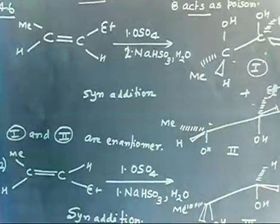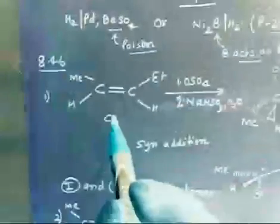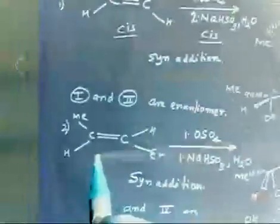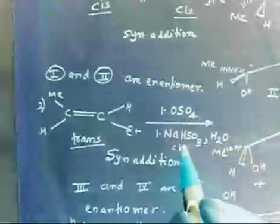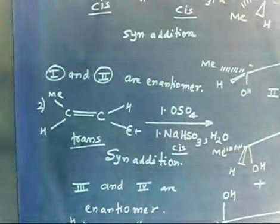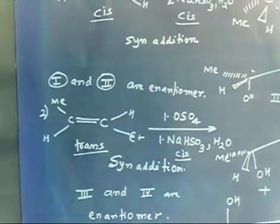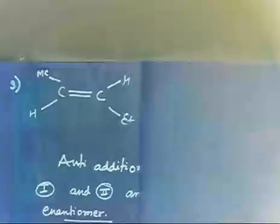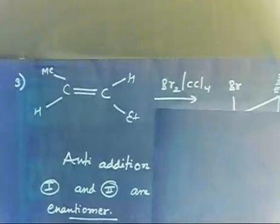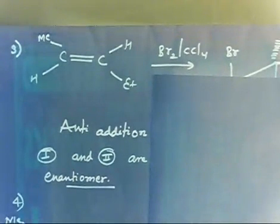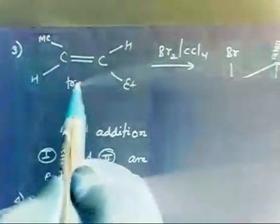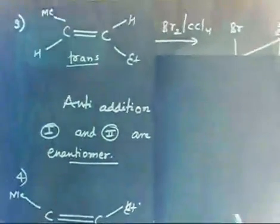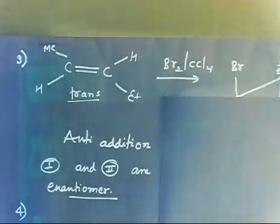What we have done: compound is cis, addition is cis; compound is cis, addition is trans; compound is trans, addition is trans; compound is trans, addition is cis. Now we will discuss another case in which compound is cis or trans but addition will be trans (anti). So let us write the product yourself — what will the product be if you react with bromine in CCl4? Take cis, take trans, give me the final four answers. I will wait for one minute.